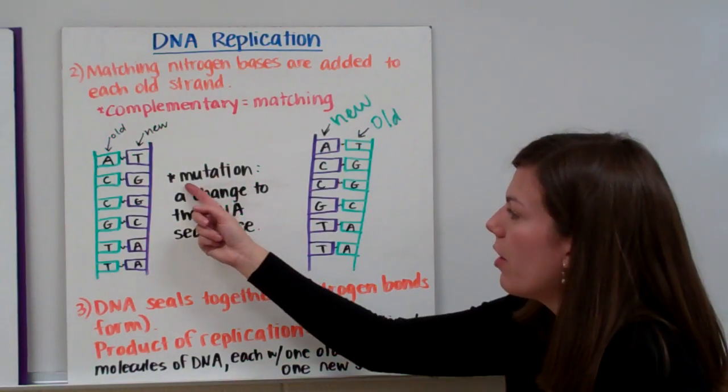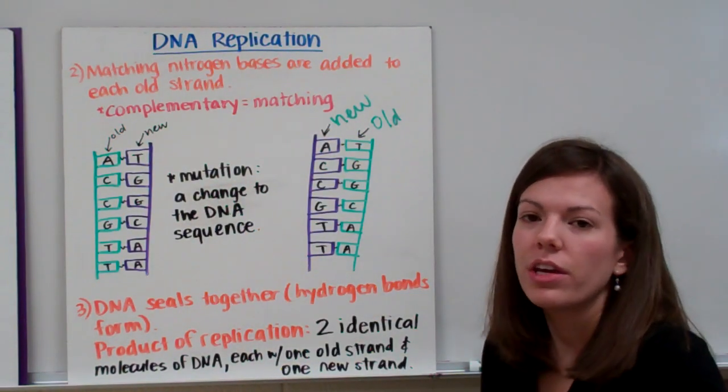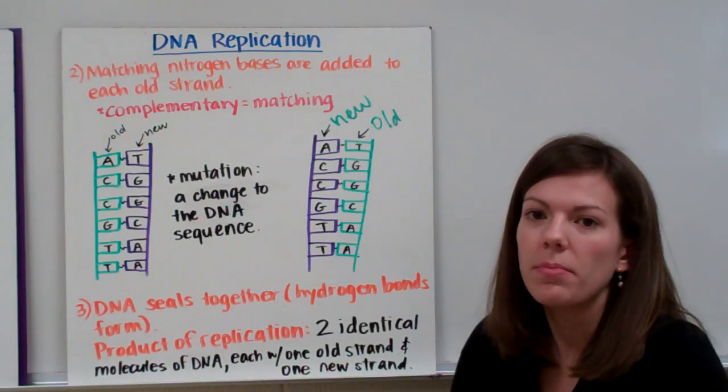If you make a mistake when you're replicating DNA or any change to a DNA sequence, it's called a mutation. Not all mutations are bad. Usually you don't even know if you have a mutation, but some of them are bad and some of them are beneficial.